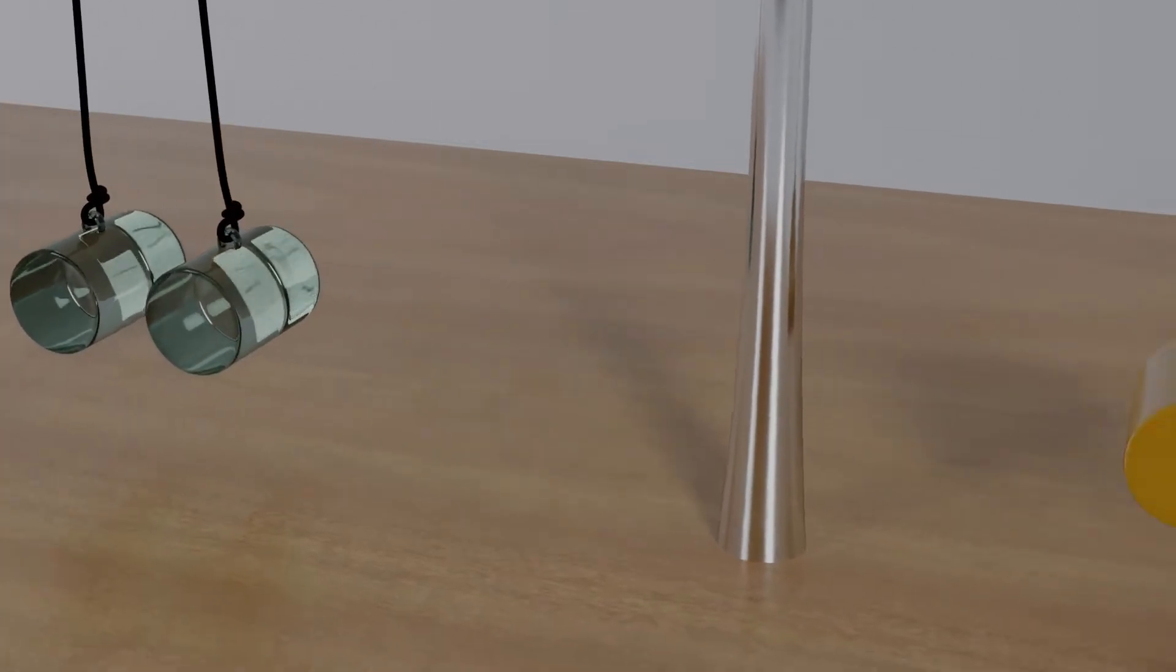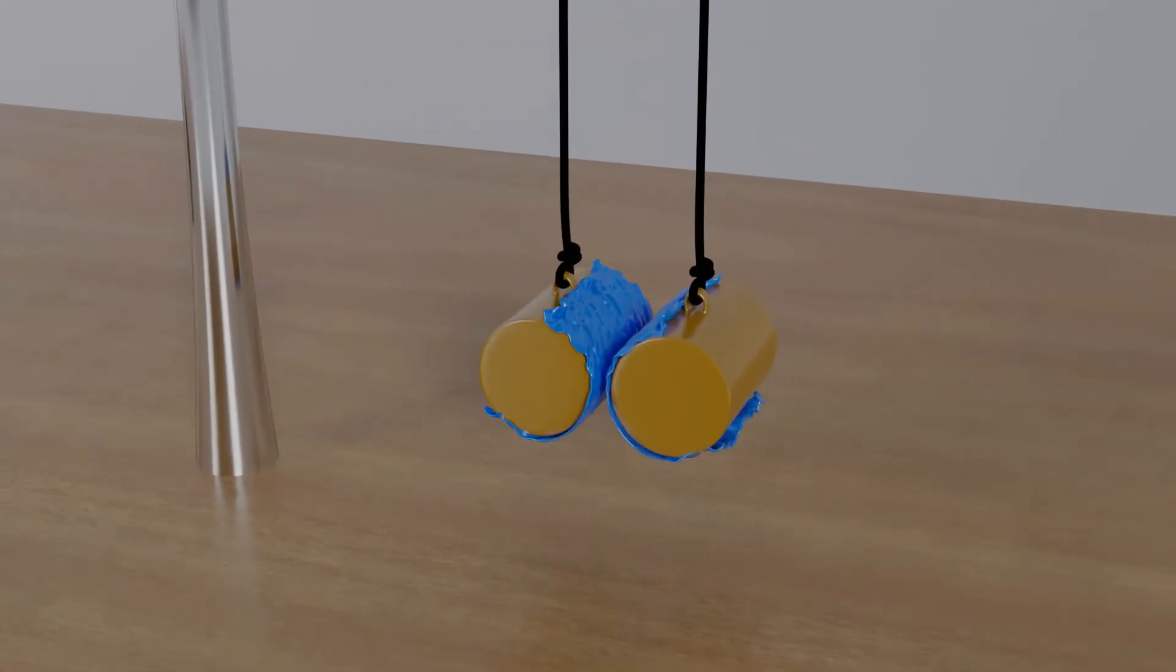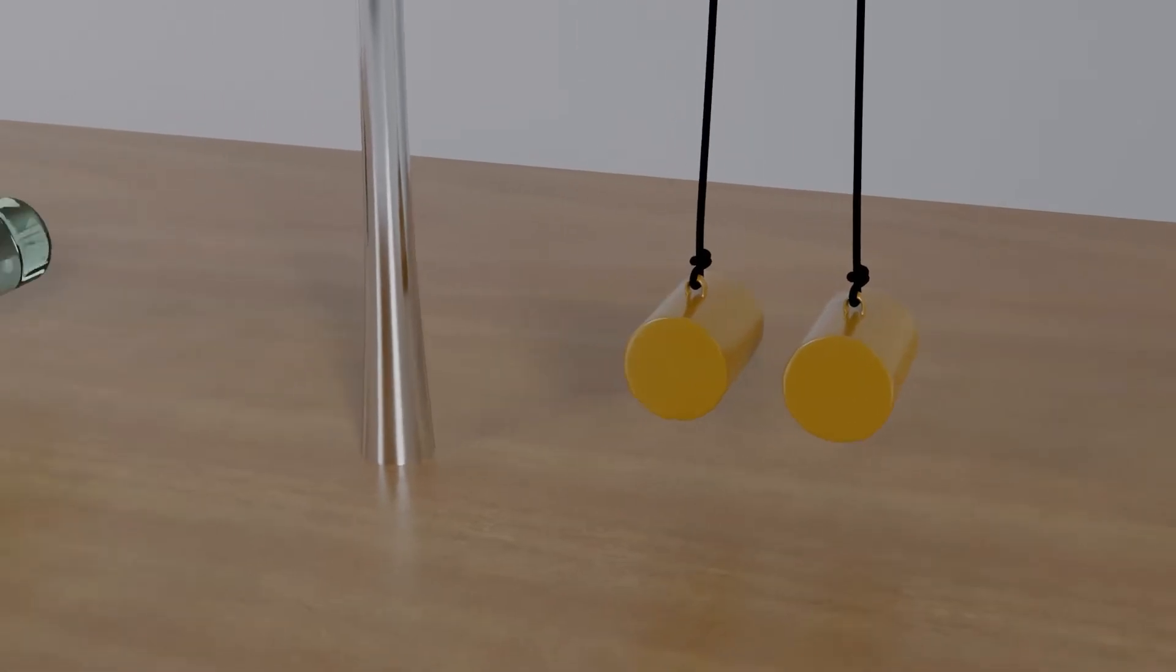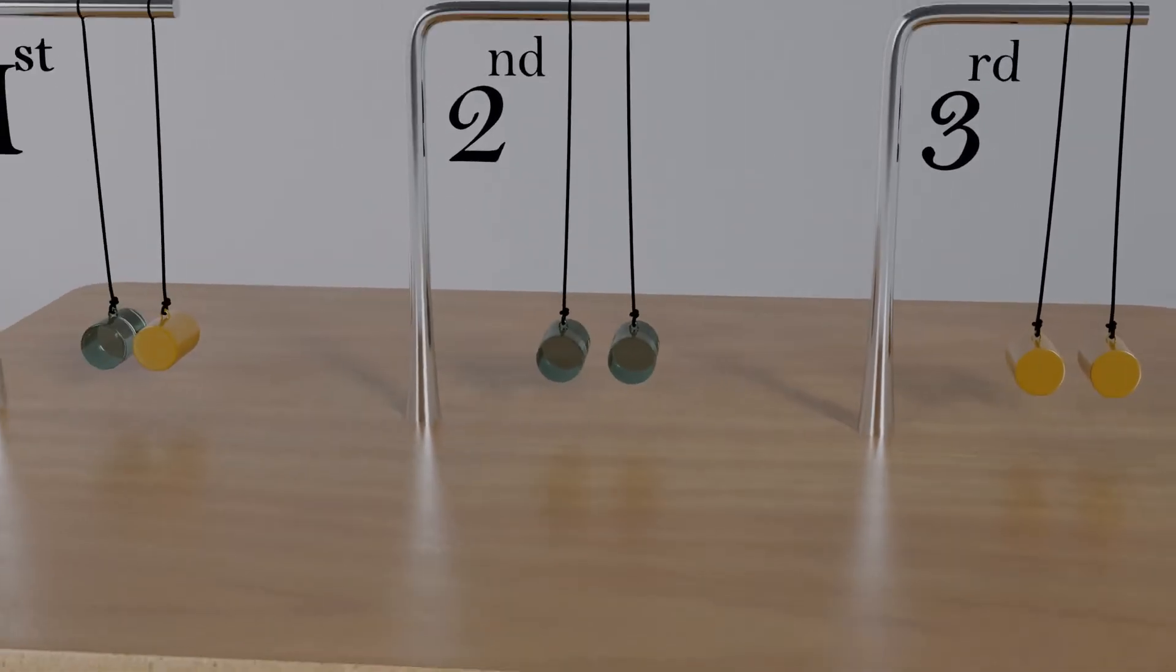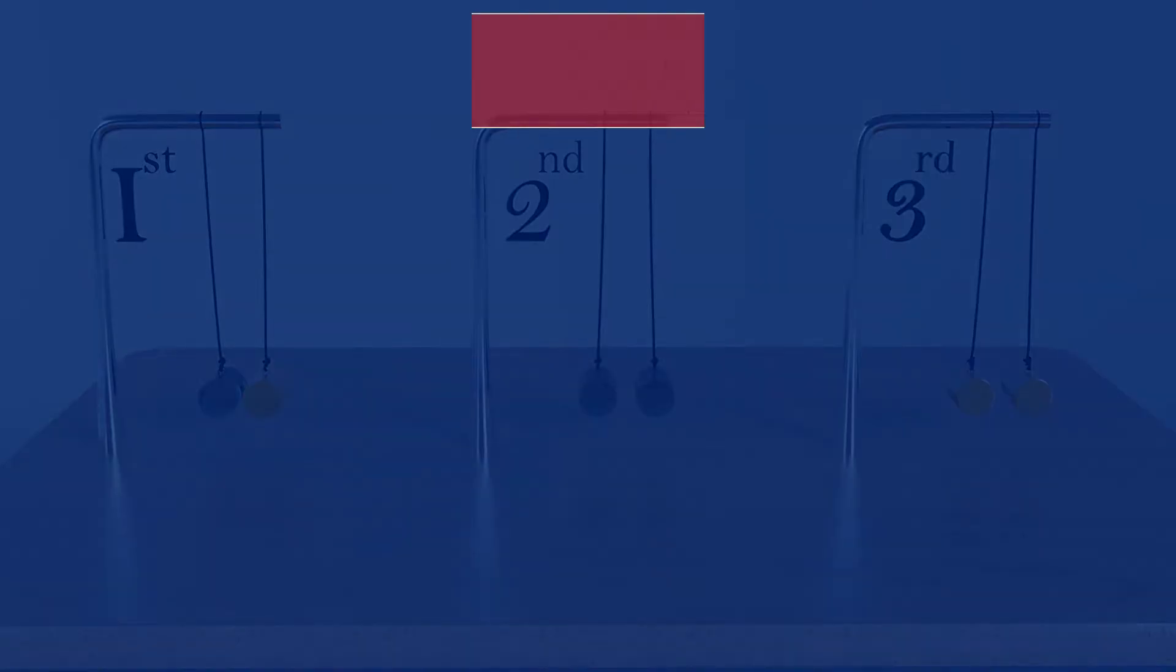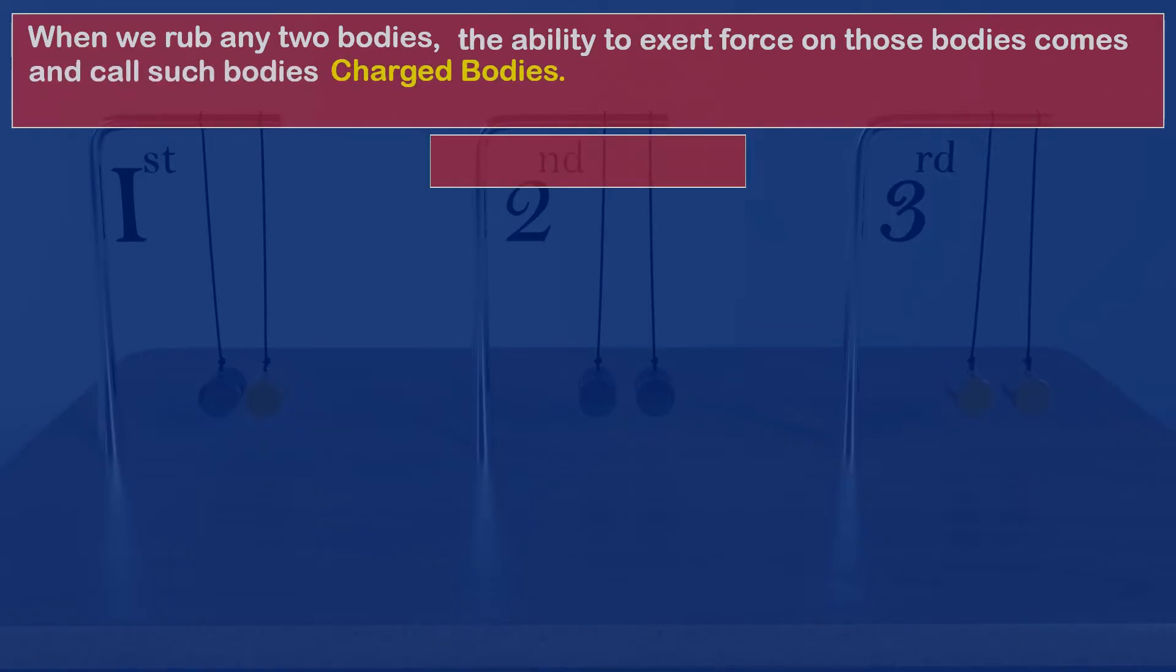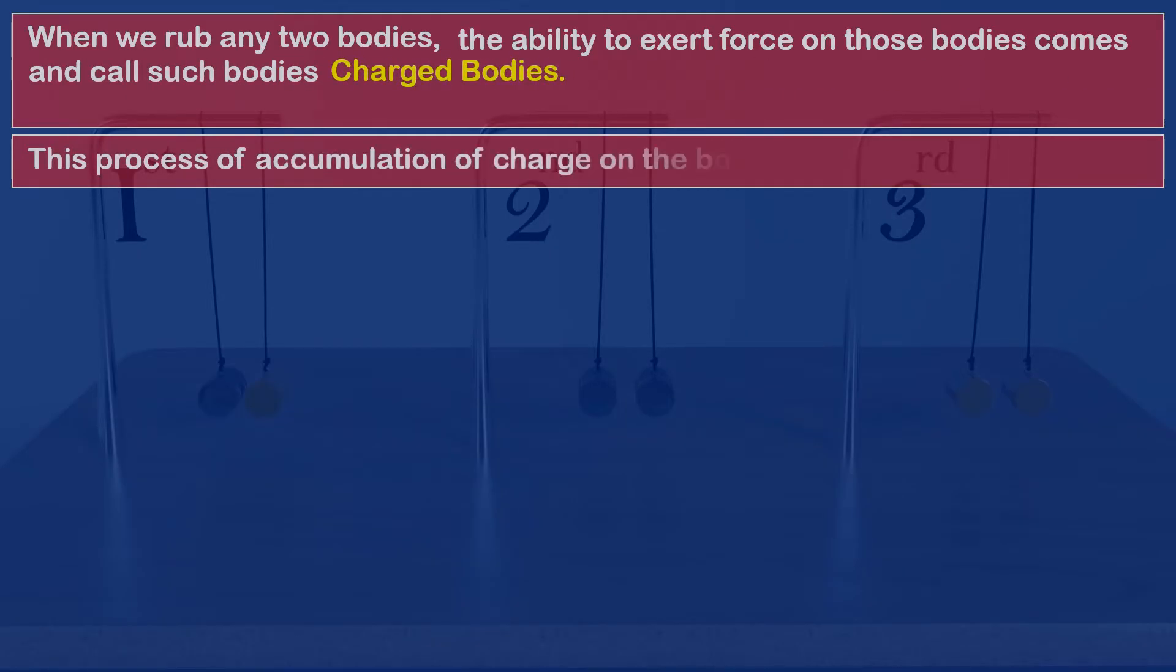Now when we rub the third setup, where both the plastic rods are suspended with a silk cloth, we again experience the force of repulsion. Scientists understood one thing from such experiment. When we rub any two bodies, the ability to exert force on those bodies comes, and we call such bodies charged bodies. This process of accumulation of charge on the body was called electrification.